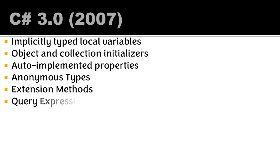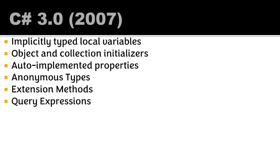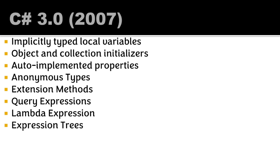C# 3.0 also brought extension methods, allowing you to extend existing types like string and add more functionality. Query expressions arrived with a declarative syntax similar to SQL or XQuery. Lambda expressions allowed writing SQL-like expressions to collect and operate on data. Expression trees represent code in a tree-like format where each node is an expression.